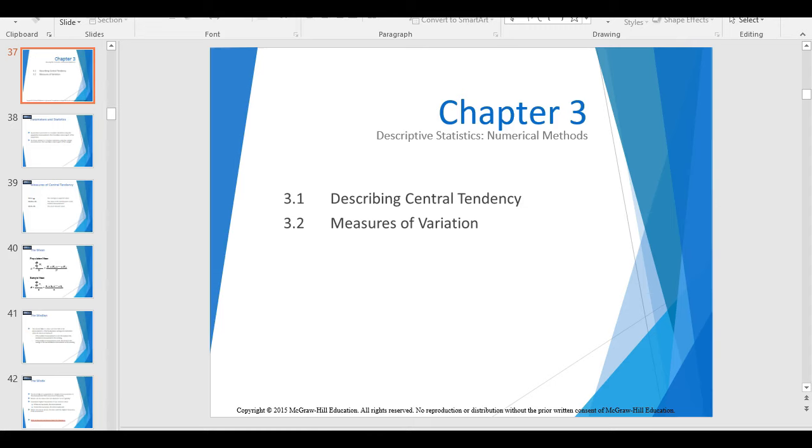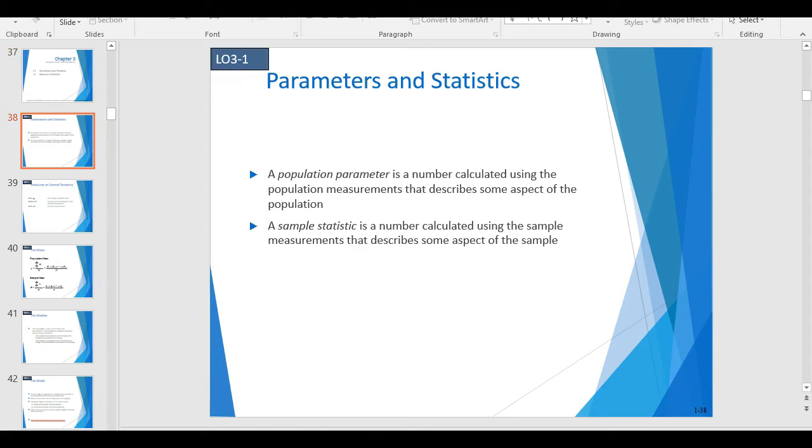As you can see in Chapter 3, we've got 3.1 and 3.2. In the book, they go all the way up to 3.6. We're not going to be covering 3.3 to 3.6. We're just going to be looking at Central Tendency and Measures of Variation. This video in particular is going to be describing Central Tendency.